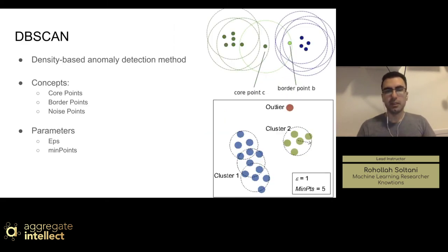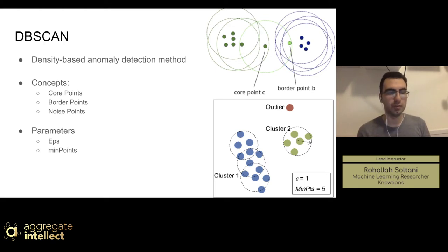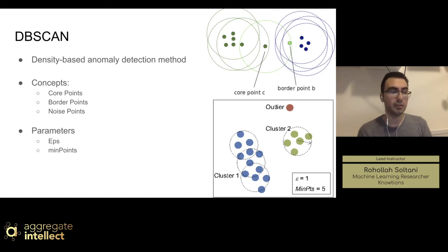Another algorithm, which is one of my favorites, is DBSCAN — a density-based anomaly detection method. DBSCAN is a clustering algorithm used for clustering data into groups. It's also used as a density-based anomaly detection method. DBSCAN groups together points that are close to each other based on a distance measurement, which can still be Euclidean or anything, and it also marks points that are in a low-density region in your data.